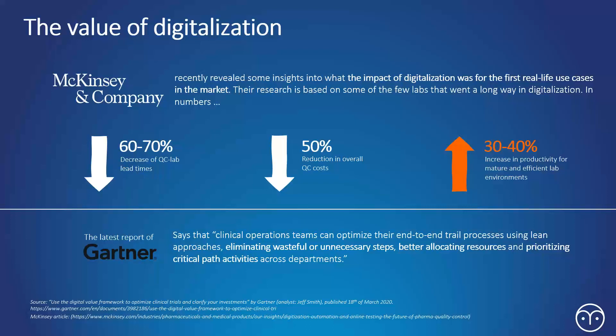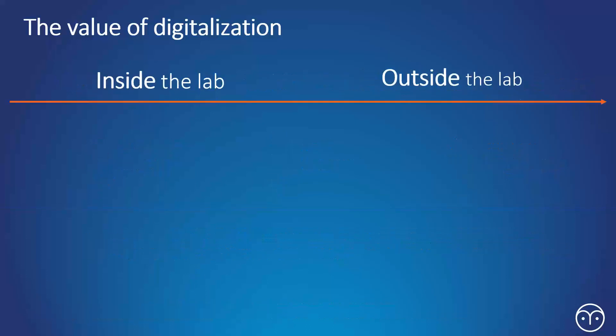And I suppose, this has really been backed up by some of the early adopters of digitalized lab systems, as has been mentioned by McKinsey and Gartner. And I suppose you can see some pretty impressive numbers here with 60 to 70% decrease of QC lab lead times, 50% reduction in overall QC costs, and obviously big boosts in productivity.